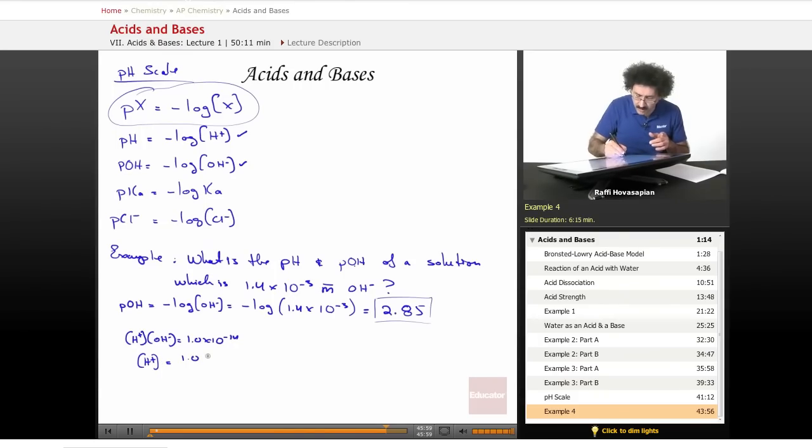Equals 1.0 times 10 to the negative 14 divided by 1.4 times 10 to the negative 3. That's going to equal 7.2 times 10 to the negative 12. And then when I take the pH of that, that's going to be the negative log of the H concentration. Negative log of 7.2 times 10 to the negative 12 equals 11.14.